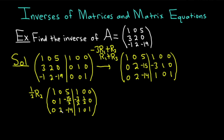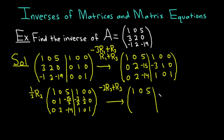Now we're going to make this 2 in the third row a 0. To do that, we multiply the second row by negative 2 and add it to the third — that's negative 2 times row 2 plus row 3. This takes a lot of practice to get good at. Keeping the first row the same: 1, 0, 5, 1, 0, 0. Row 2 is 0, 1, negative 15 halves, negative 3 halves, 1 half, 0.